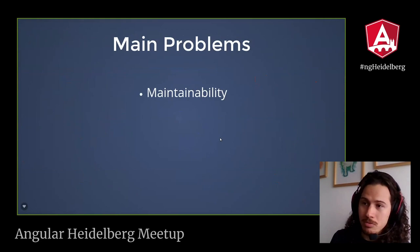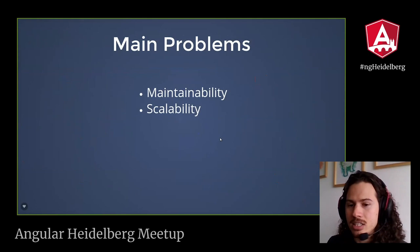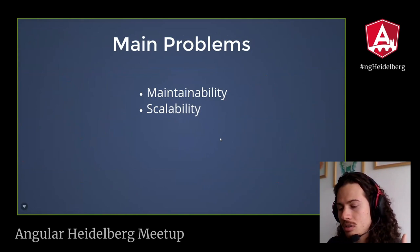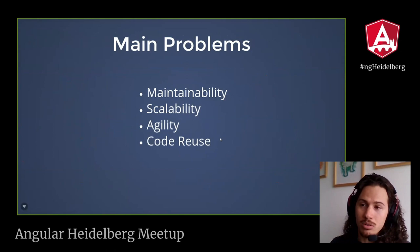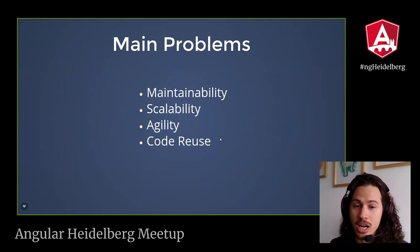What are the main problems of this approach? It is very hard to maintain. The scalability is not that nice — the organization cannot scale quickly. We also lose agility because teams need to coordinate to accomplish a new feature. And we are not reusing the code; without the library approach, we are repeating ourselves.